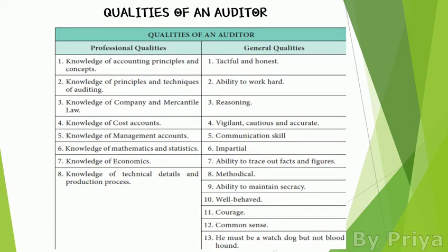Next are the qualities of an auditor — both professional and general. Professional qualities include: knowledge of accounting principles and concepts, principal techniques of auditing, company and mercantile law, cost accounting, management accounting, mathematics and statistics, economics, and technical details and production processes.